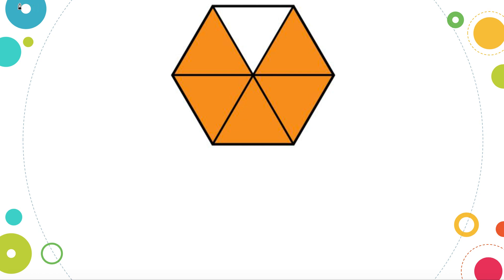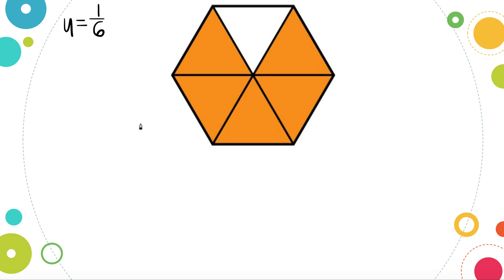Let's take a look at this proper fraction. In order to find our unit fraction, we need to find how many pieces are in the whole. Our unit fraction always has a numerator of one, but to find our denominator we need to count how many pieces are in the whole: one, two, three, four, five, six. So our unit fraction is one-sixth.